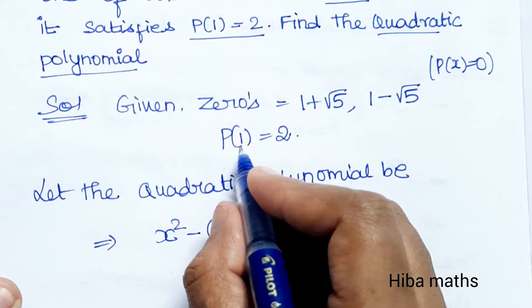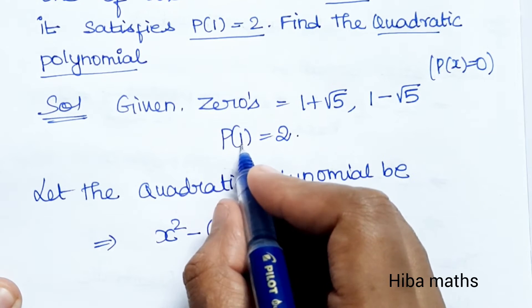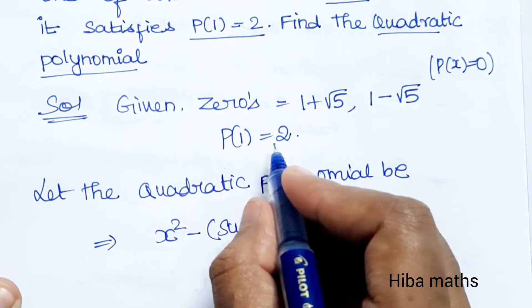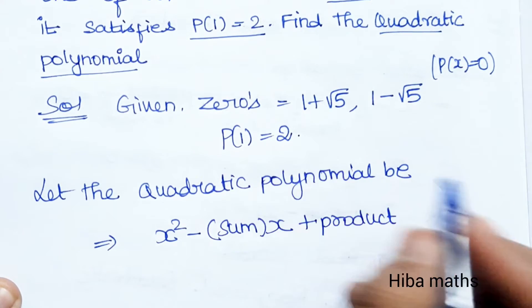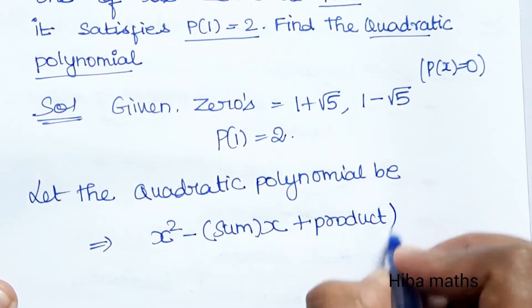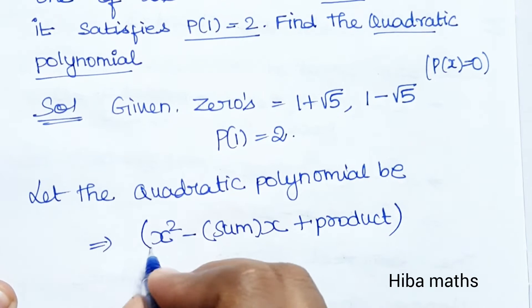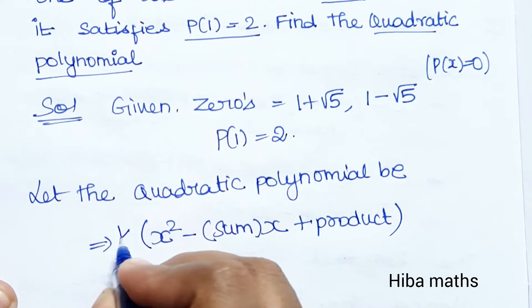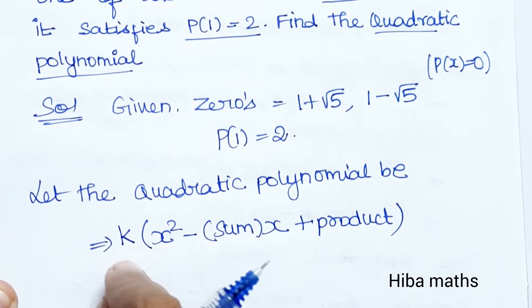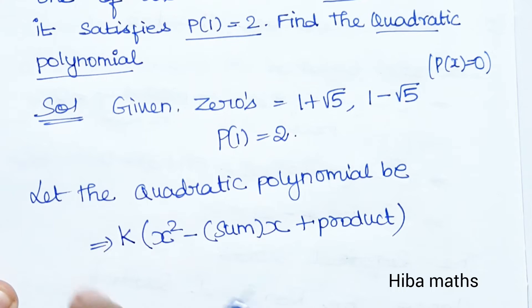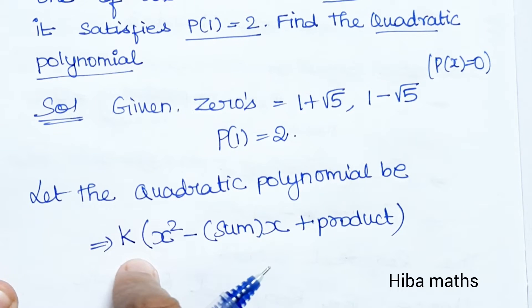If we substitute x = 1, we substitute the value 2 for p(1). The polynomial will have a constant factor k, so we choose k as that variable constant multiplier.